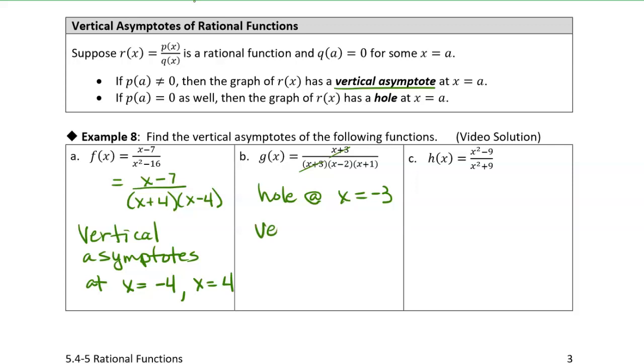So we're going to have vertical asymptotes at x equals two and x equals minus one, because those are the values that would cause g of x to be undefined. So we're just going to block those x values out with an asymptote.